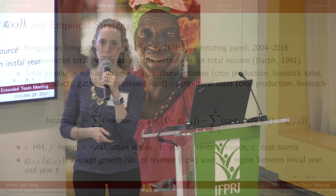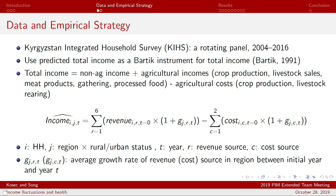We have a great data source: the Kyrgyzstan Integrated Household Survey, which is a rolling panel dataset. The median household is in the survey for about four years, so we don't have data on every household in every year, but we have this rolling panel from 2004 to 2016, allowing us to look at a fairly long time period of what income fluctuations are doing to child health.